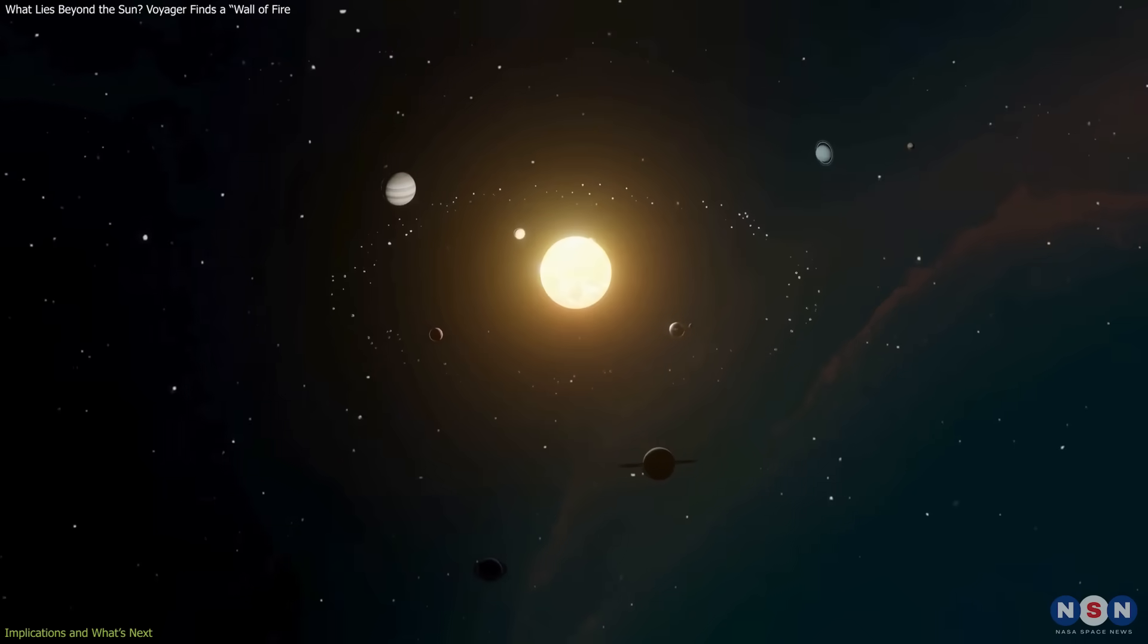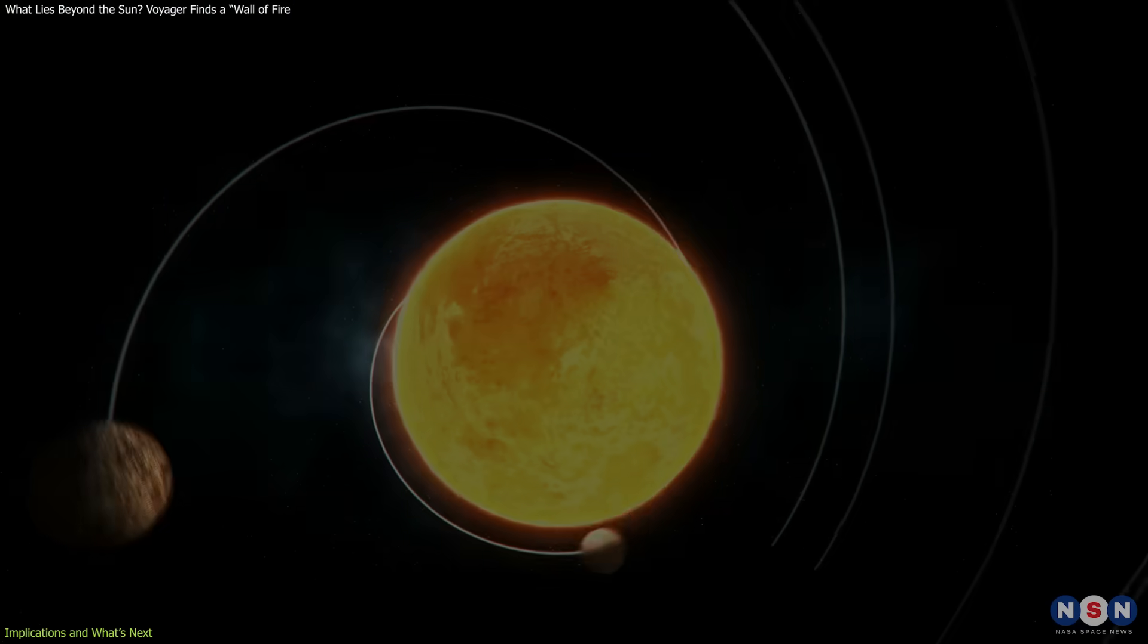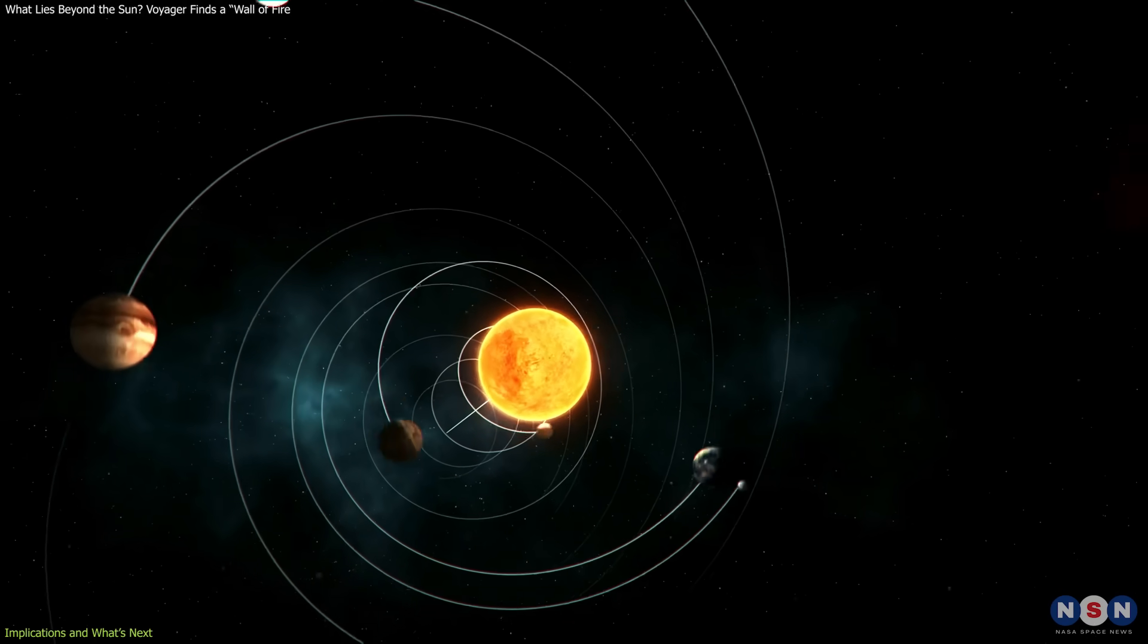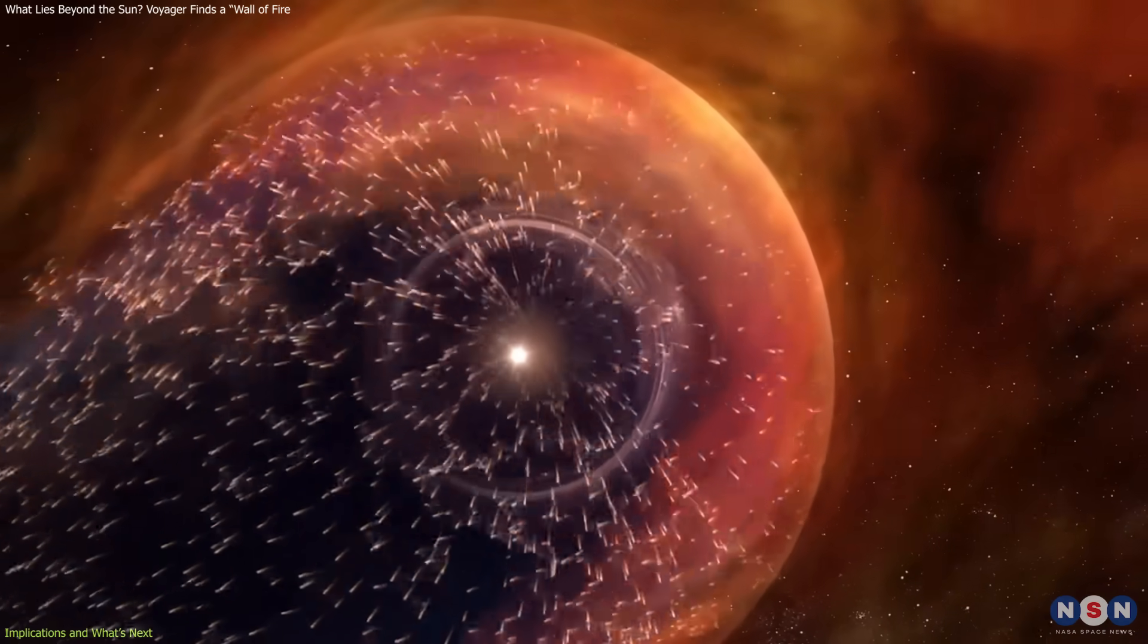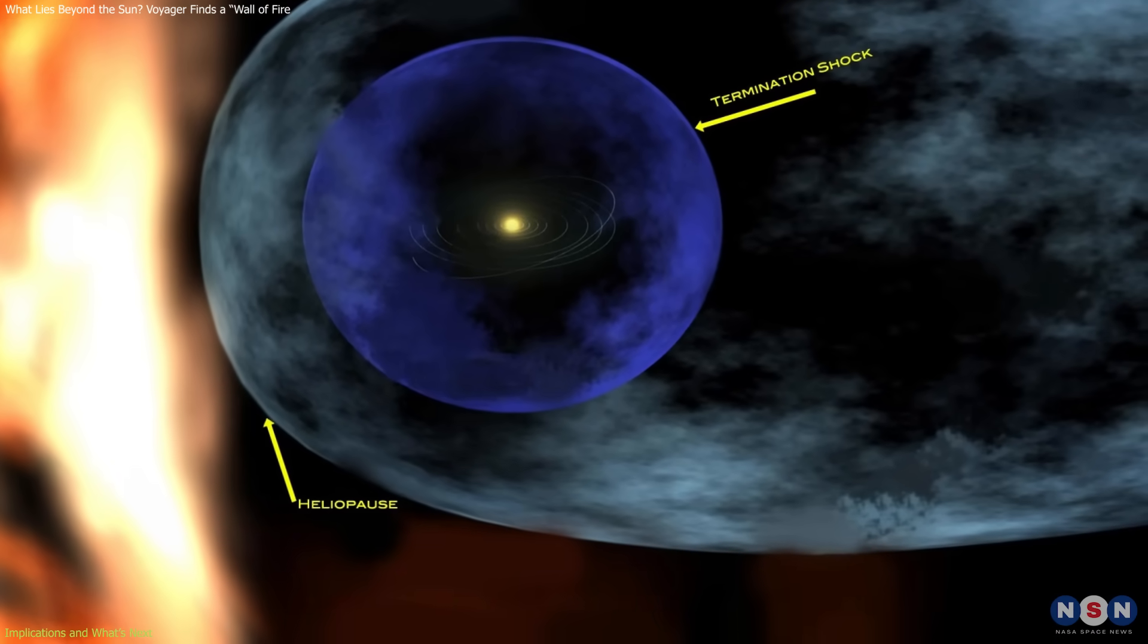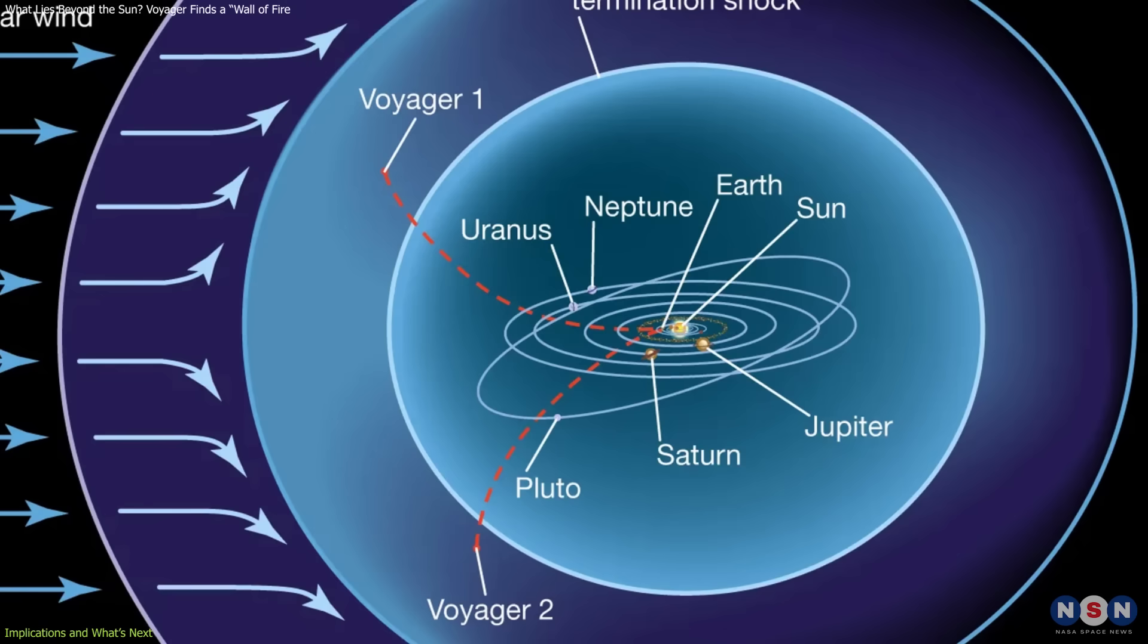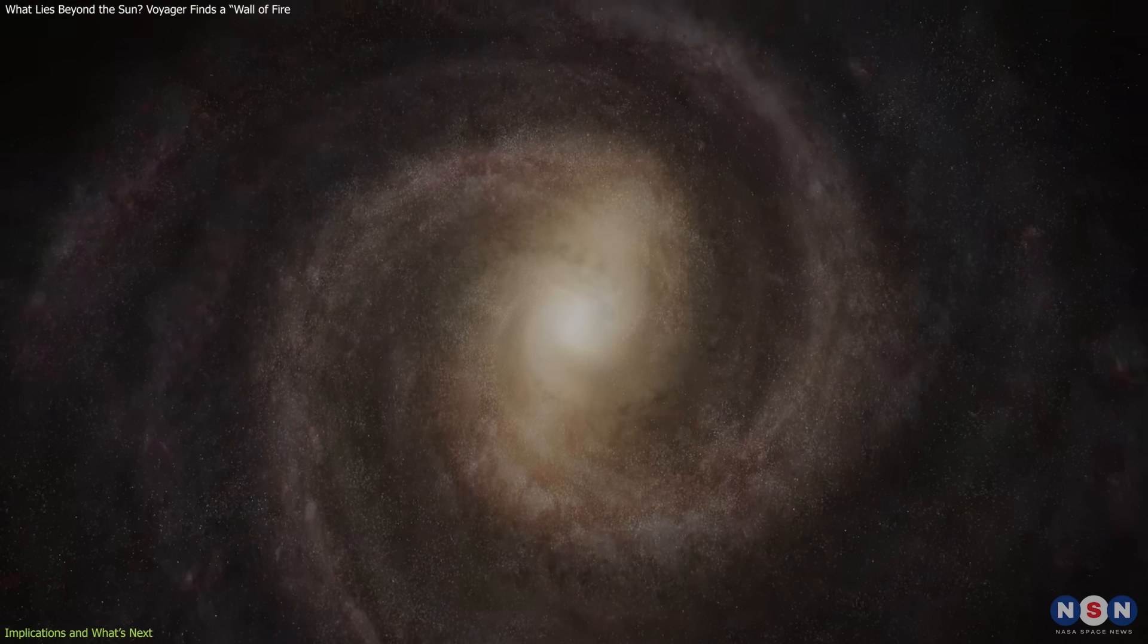This discovery opens new questions and priorities for space science. First, it redefines the scale and behavior of the solar system. If the heliopause is more complex and active than previously believed, its size and shape need to be reconsidered. Researchers are already using Voyager's data to update models of the heliosphere and its interactions with the Milky Way.